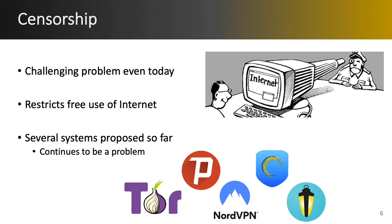Censorship is an ongoing problem in today's world and it is an important one because censors are restricting the free use of the internet to users in their regions. This is a well-studied problem and to circumvent the censors many circumvention tools have been introduced over the years. Some examples are Tor, VPNs, decoy routing, and so on.